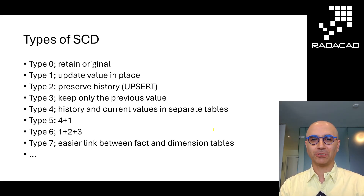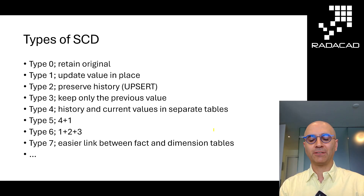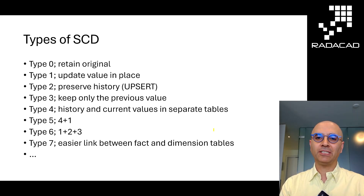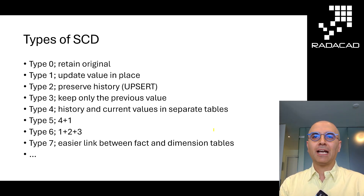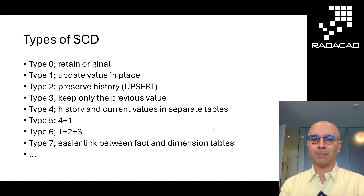Type 0 means retain the original — don't accept the change. Type 1: accept the change but just update it; you don't keep any historical information. Type 2, which is one of the most common types, is to preserve the full history using an update and insert. Type 3: preserve a history but only a limited history, like only the previous value or two values before. Type 4: preserve the history but in a cleaner, data model way. Types 5, 6, and 7 are more like combined versions, which are rarely used.